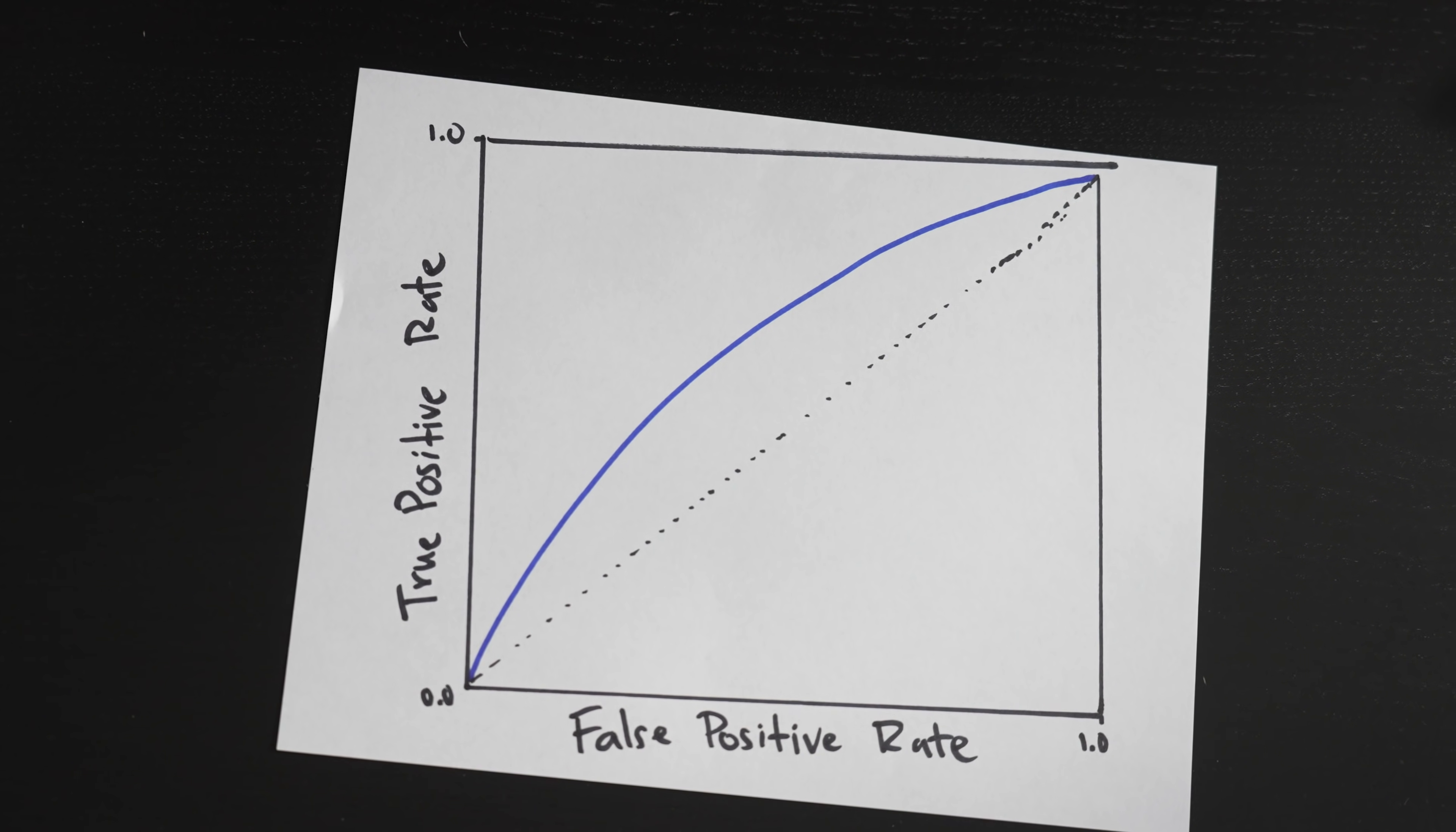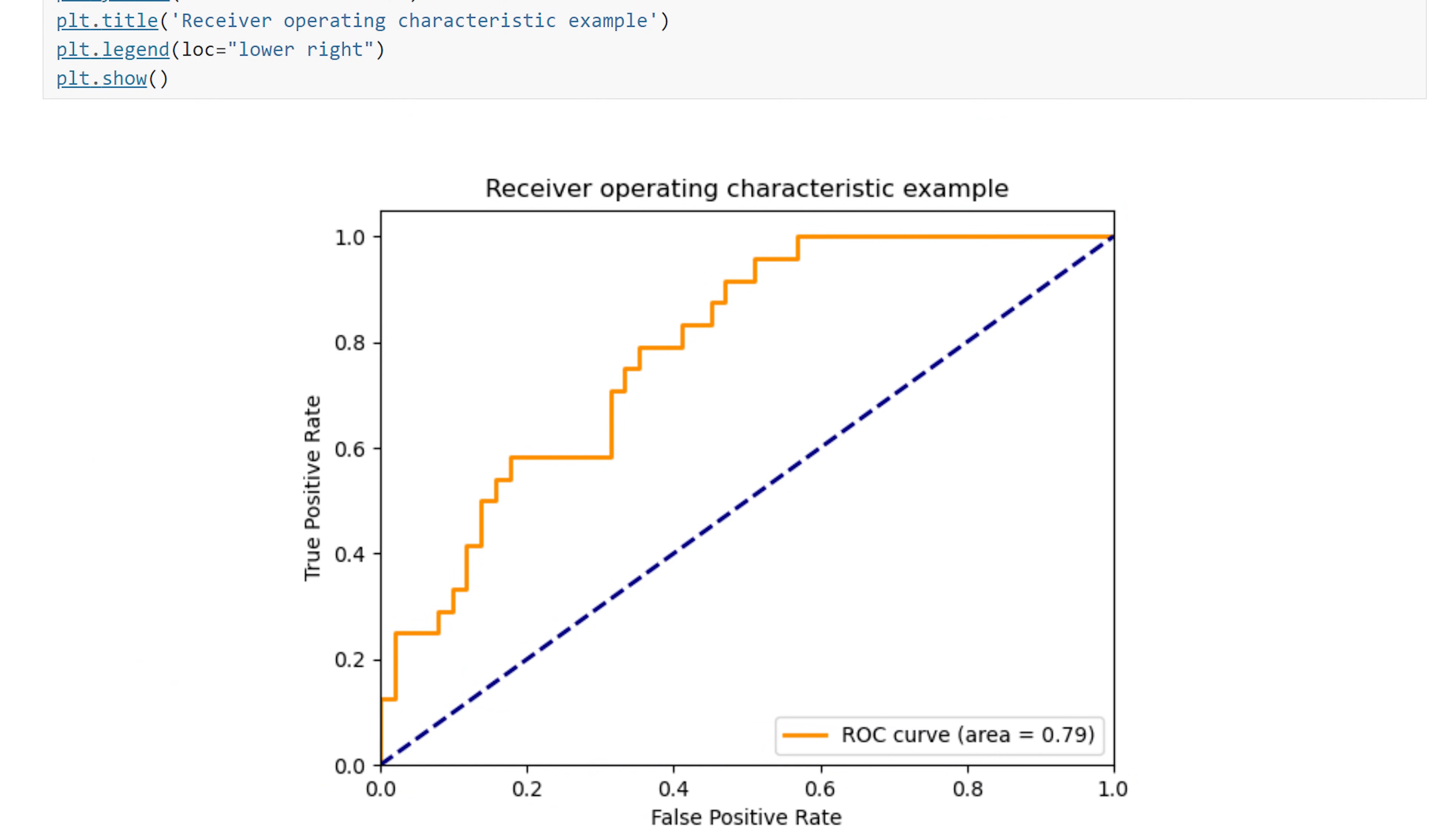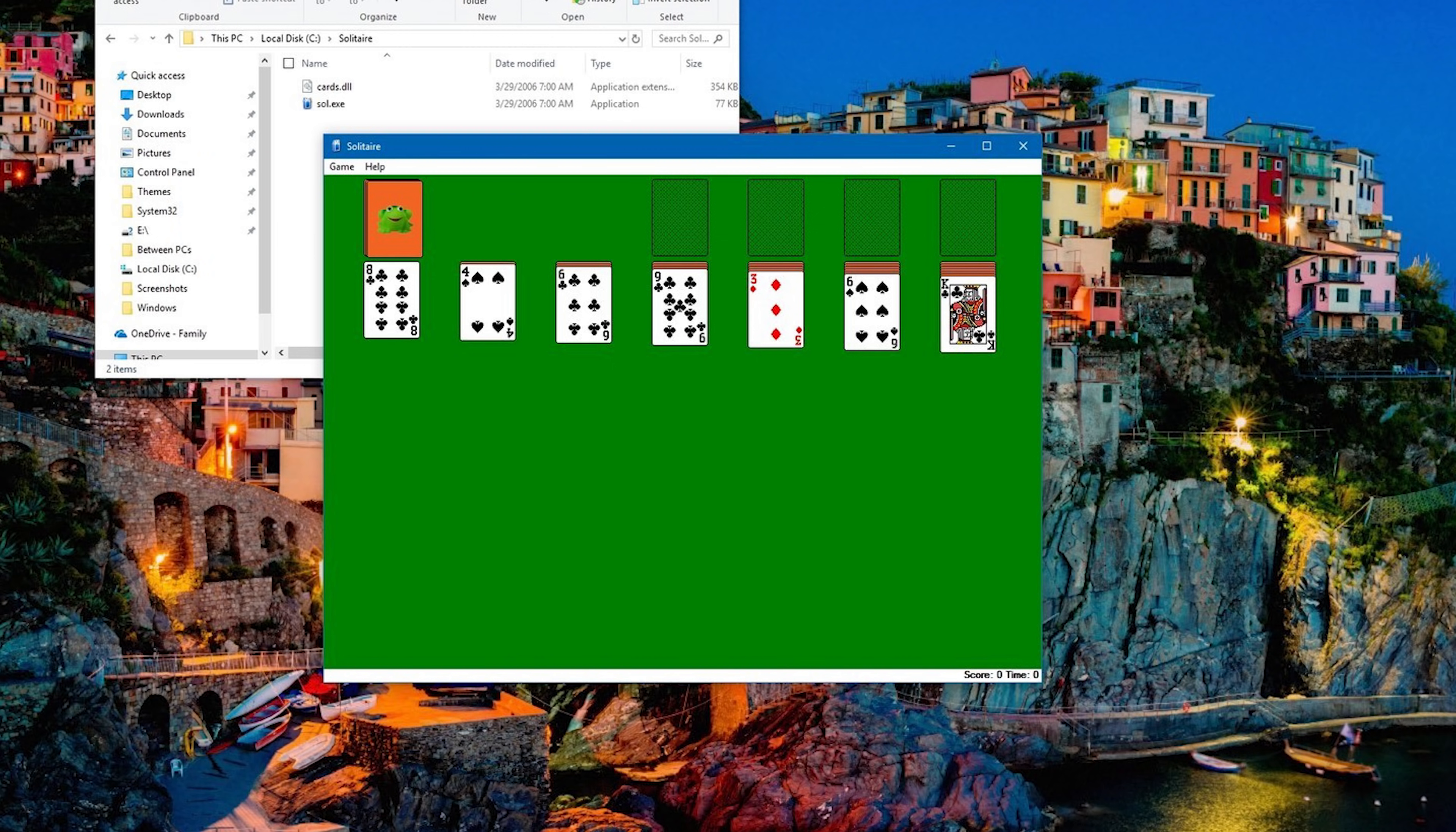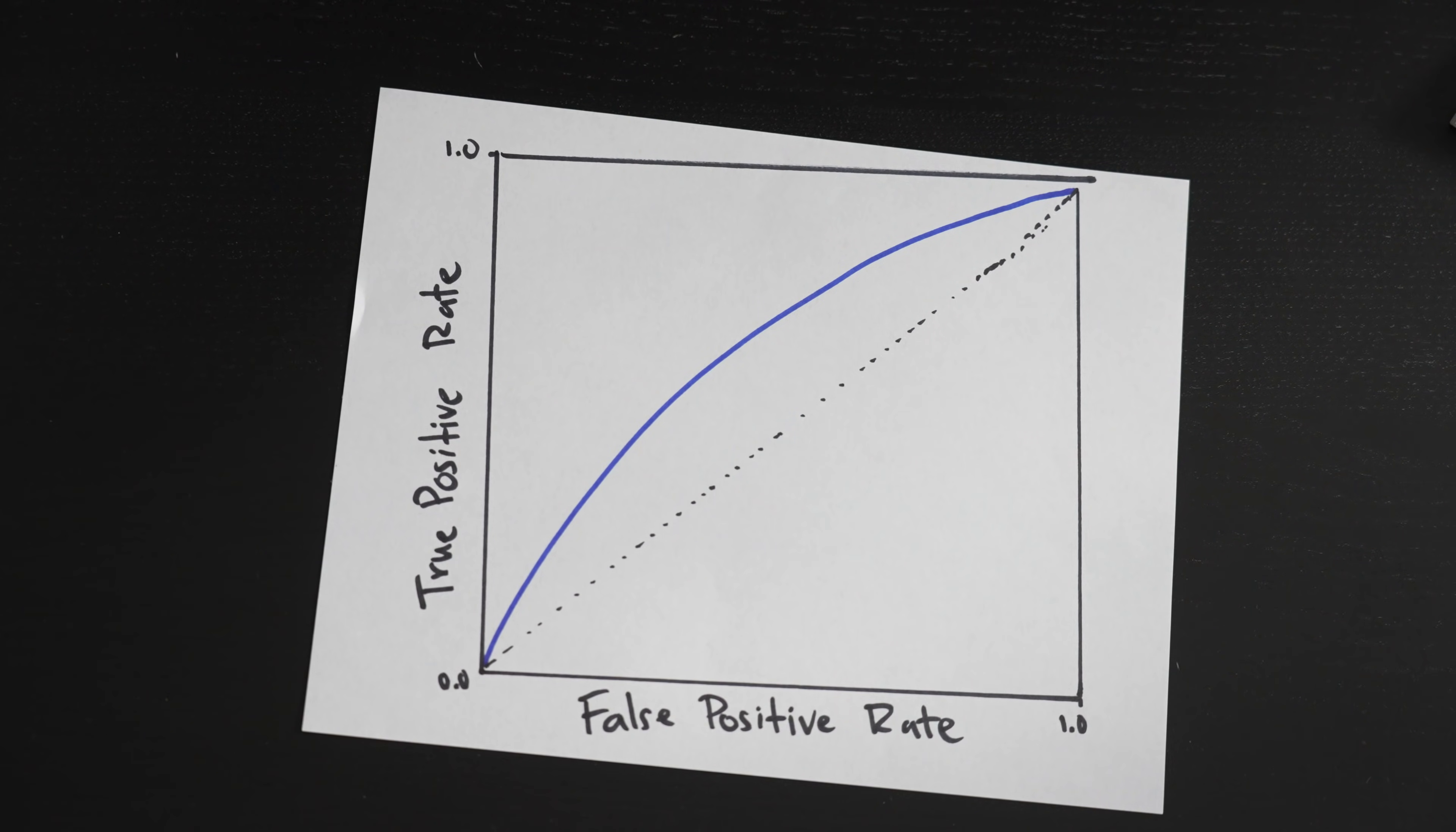If you've ever looked over a data scientist's shoulder at work, you might have seen this graph, or this on their computer, or that, but mostly this, since they're waiting on their SQL queries to finish. In this video, we'll explain what this graph actually represents.